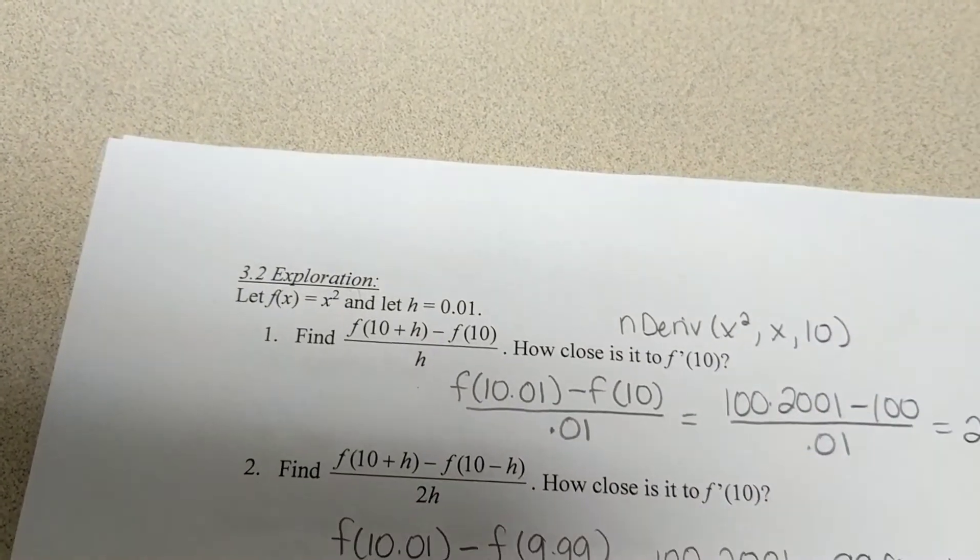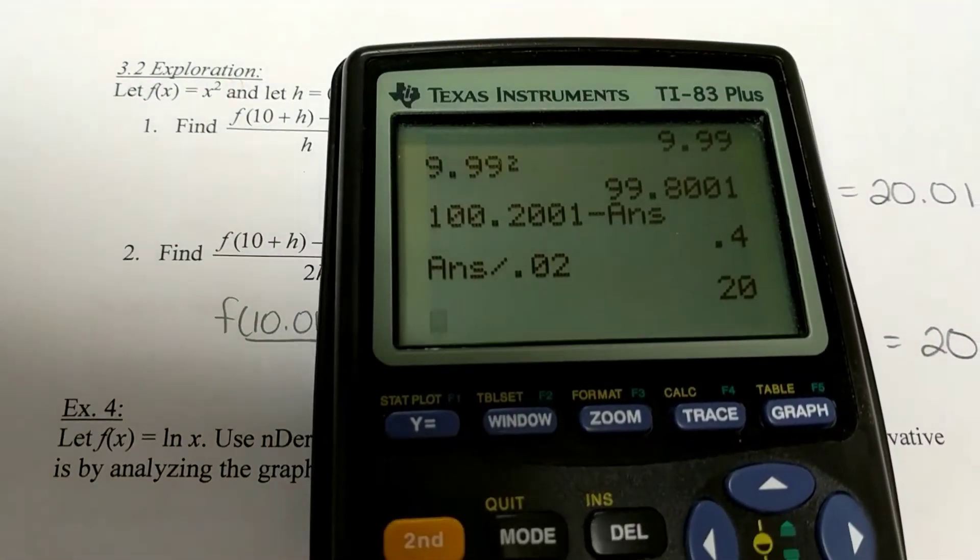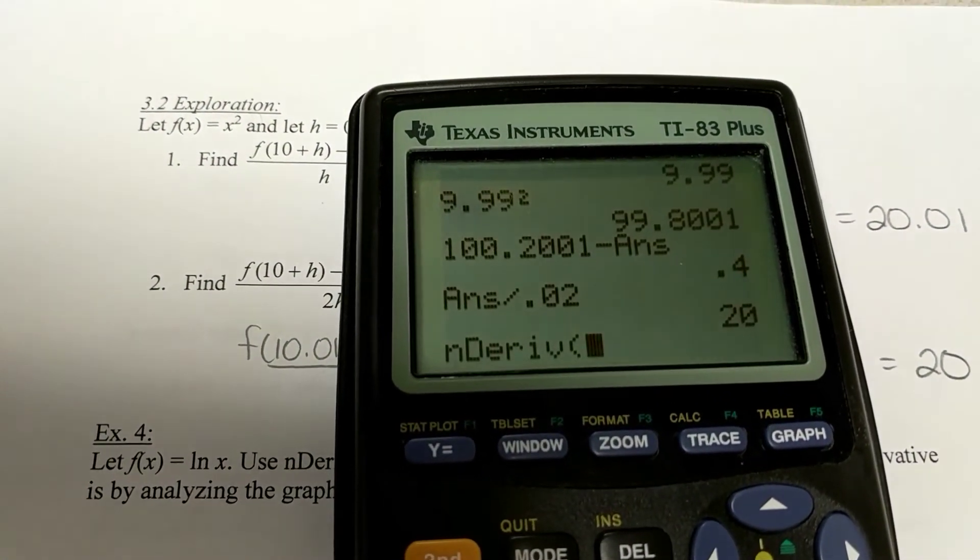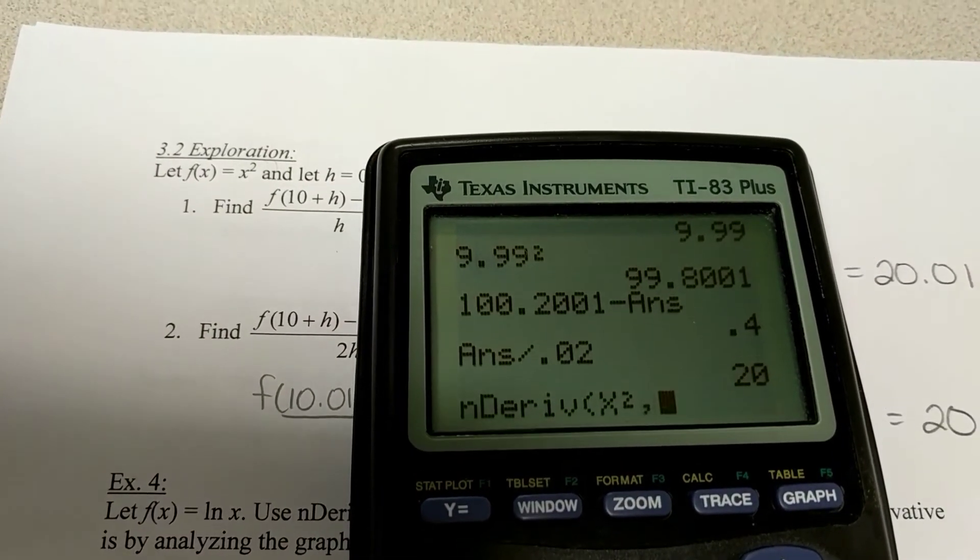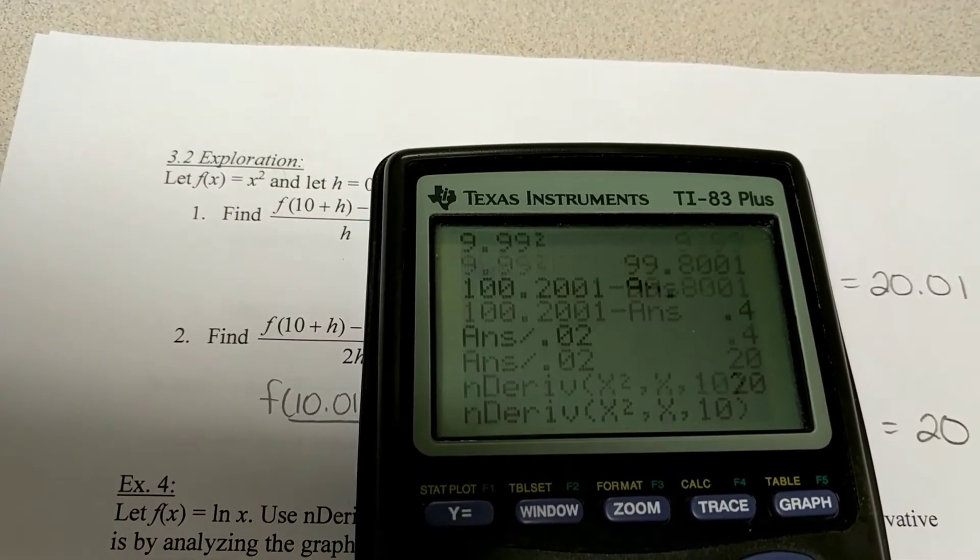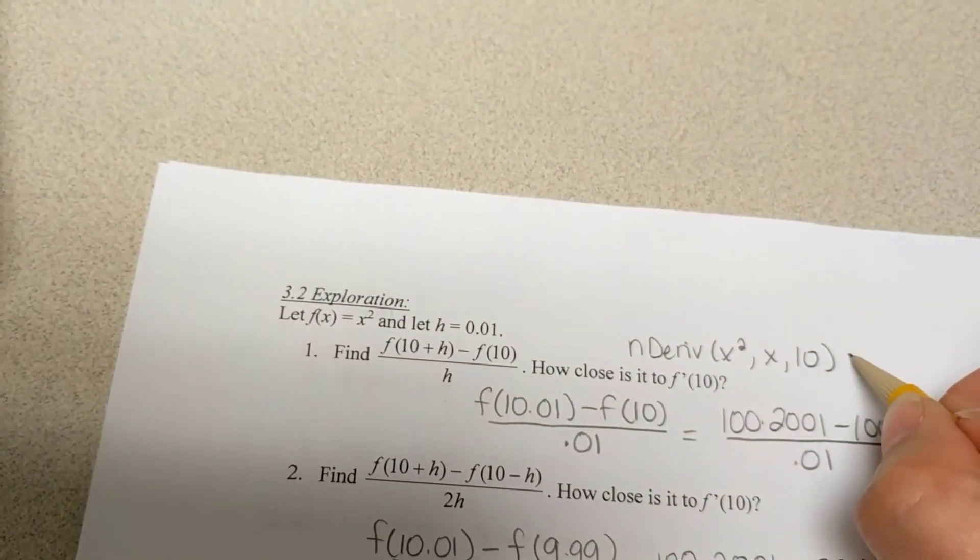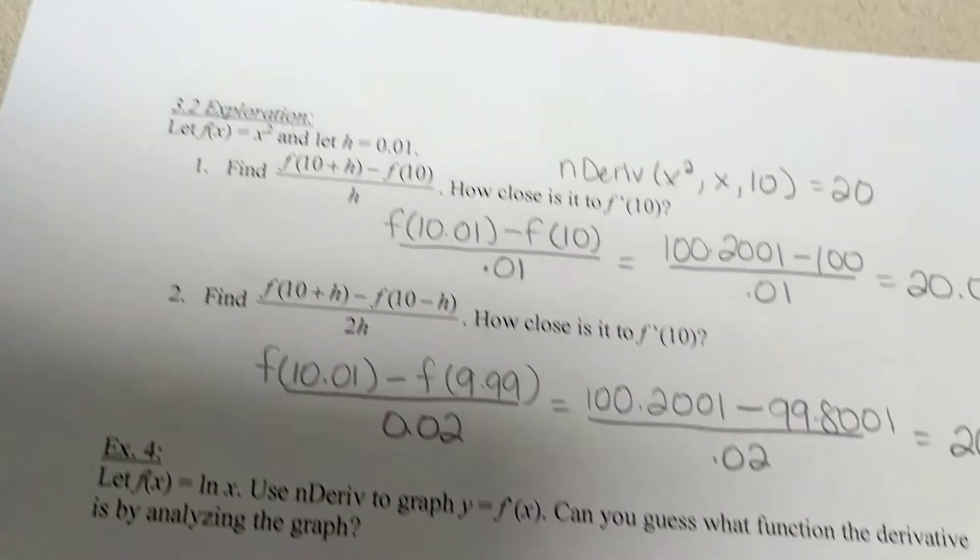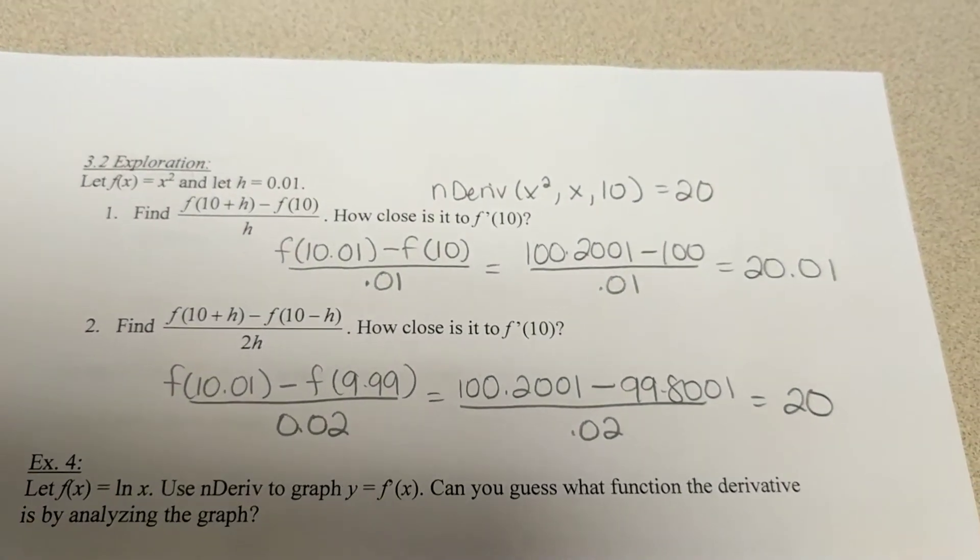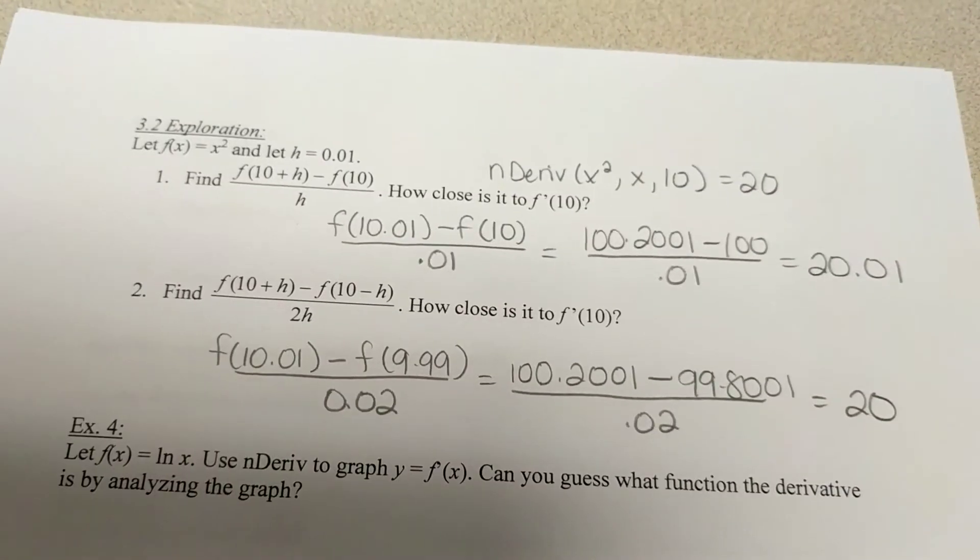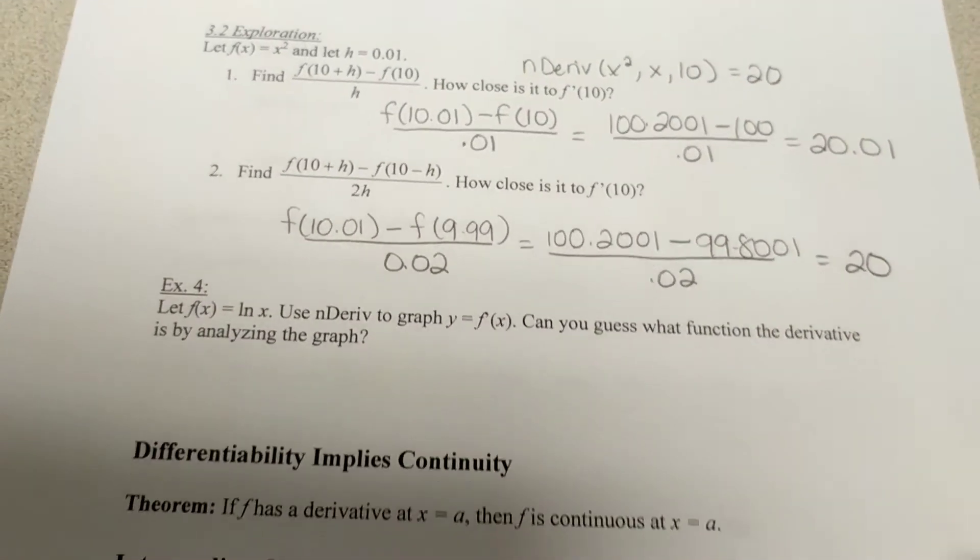I can do n derivative of x squared, comma x, at 10. And we can see that the actual slope is, in fact, 20. So, both of them get me really, really close to what the actual slope was.